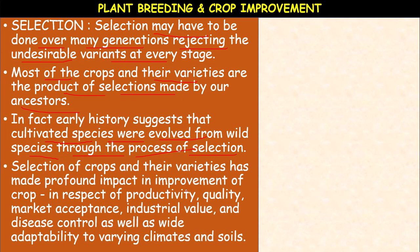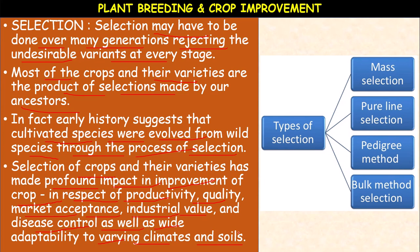The selection of crops and their varieties has made a profound impact on the improvement of crops in respect of productivity, quality, market acceptance, industrial value, disease control, and wide adaptability to changing climates and varying soils. There are four main types of selections: mass selection (the oldest method), pure line selection, pedigree method, and bulk method selection.